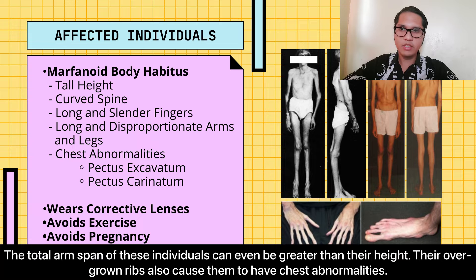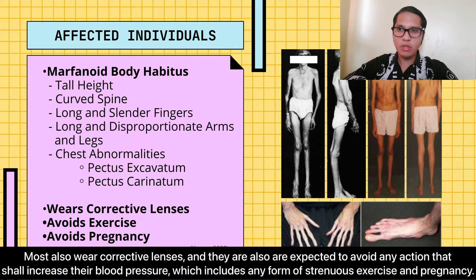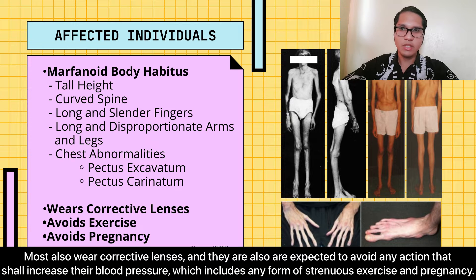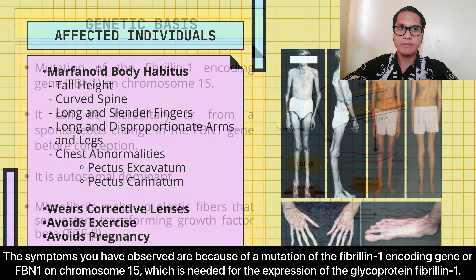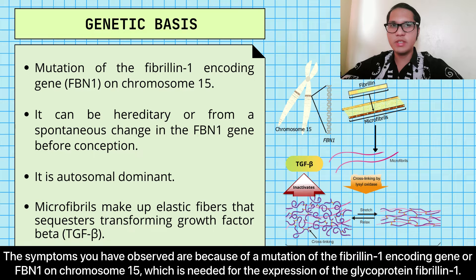Their overgrown ribs also cause them to have chest abnormalities. The person on the left has an indented breastbone, while the person on the right has a protruded one. Most also wear corrective lenses, and they are expected to avoid any action that shall increase their blood pressure, which includes any form of strenuous exercise and pregnancy. These symptoms are because of a mutation of the fibrillin-1 encoding gene, or FBN1, on chromosome 15, which is needed for the expression of the glycoprotein fibrillin-1.